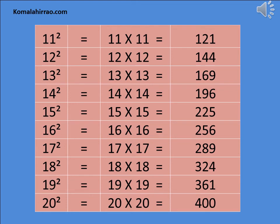19 square is equal to 19 multiplied by 19 is equal to 361. 20 square is equal to 20 multiplied by 20 is equal to 400.